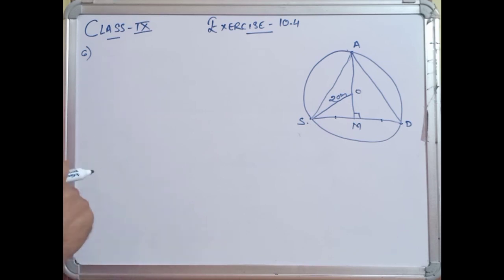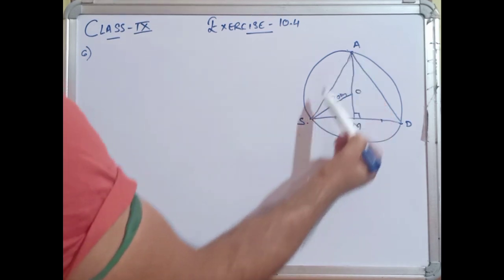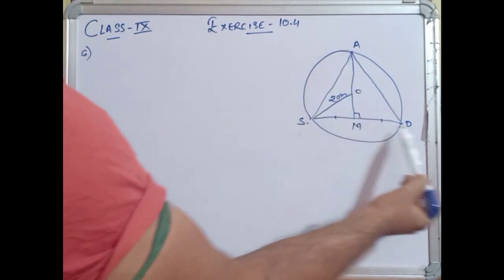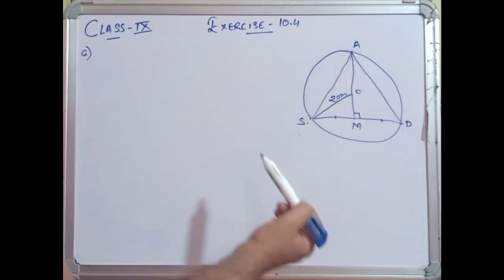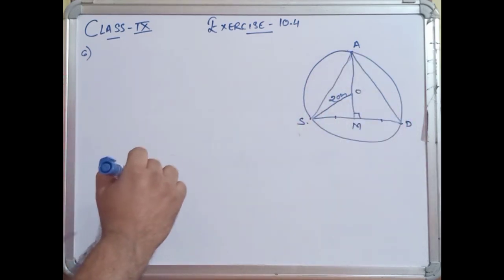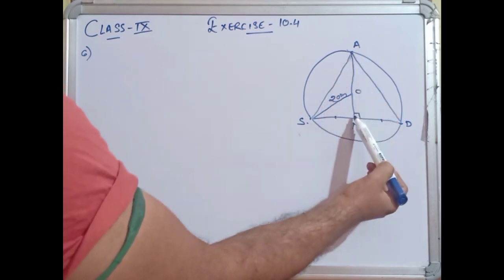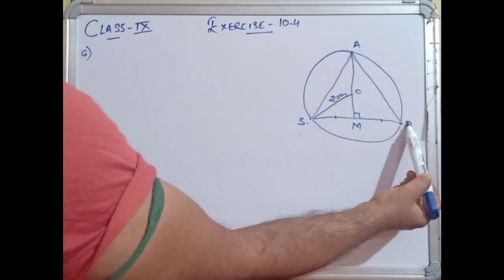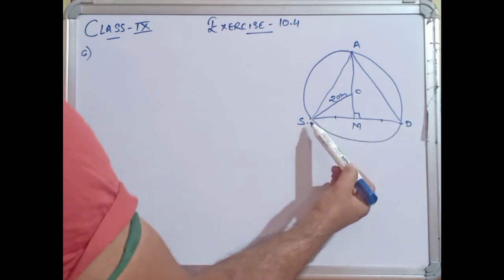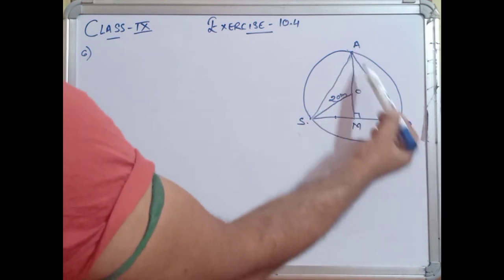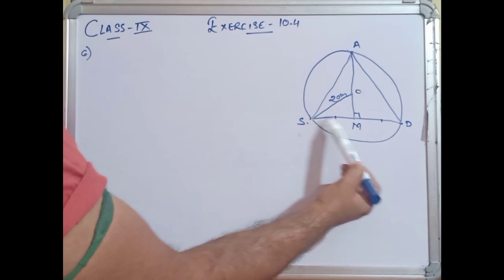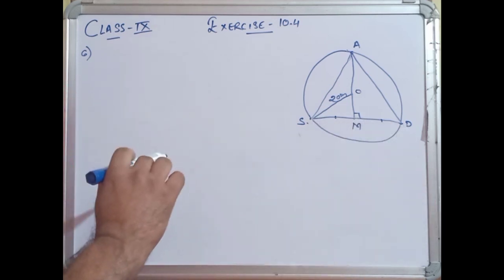Toh aapne paas jo information hai, uske hisaab se AS, SD, aur DA yeh teenon aapas mein equal hain, jiski wajah se yeh ek equilateral triangle form kar raha hai. Uske baad humne yahaan par AM construct kiya hai — jo SD ke upar perpendicular hai. Ab agar perpendicular hai aur yeh equilateral triangle hai, toh yeh median hoga, jiski wajah se SM aur MD aapas mein equal honge.